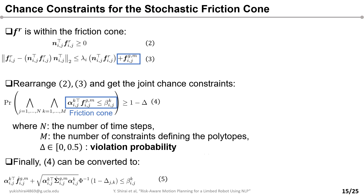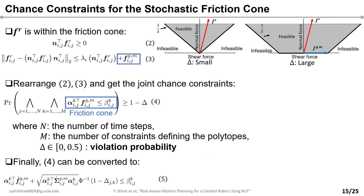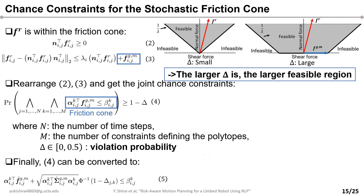Delta is the so-called violation probability. Equation 4 means the probability of satisfying these joint linear constraints is larger than or equal to 1 minus delta. Thus, if delta takes a small value such as 0, equation 4 indicates the probability of satisfying the constraints is equal to 1. In this case, the associated friction cone looks like this, with a larger feasible area compared with the other one. Eventually, equation 4 is converted into equation 5, which is our first contribution in this work.